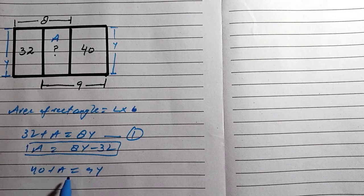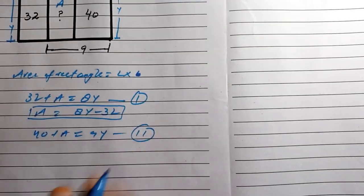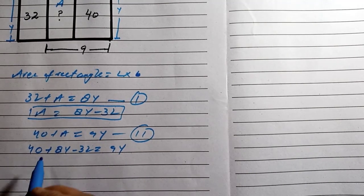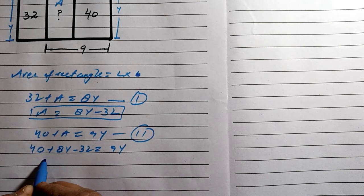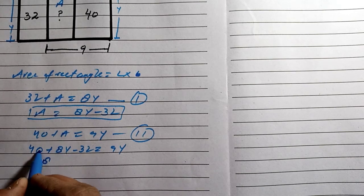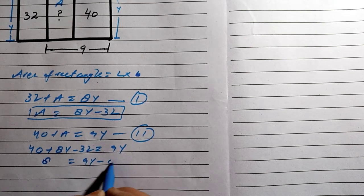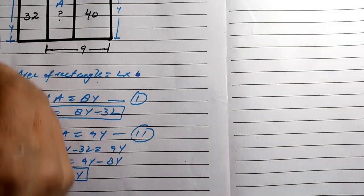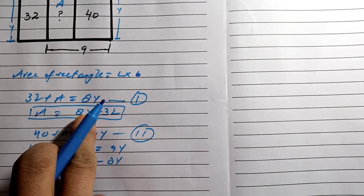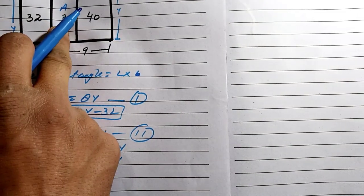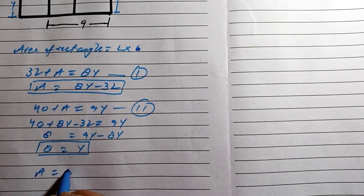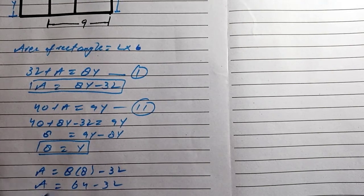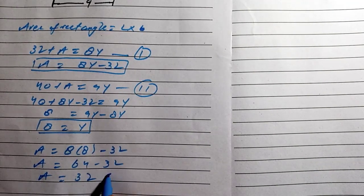We substitute the value of a from equation one into equation two: 40 plus 8y minus 32 equals 9y. So 40 minus 32 equals 8, giving us 8 equals 9y minus 8y, so 8 equals y. We get the value of y which is equal to 8. Now we can put the value of y to find a. So a equals 8 times 8 minus 32.